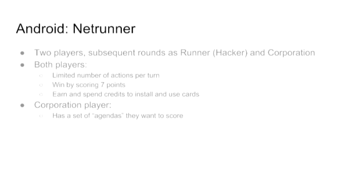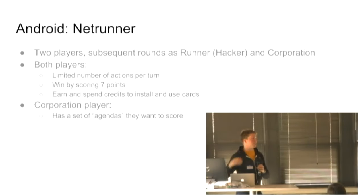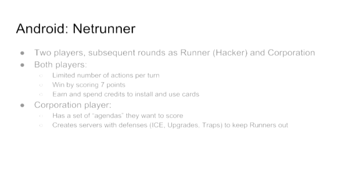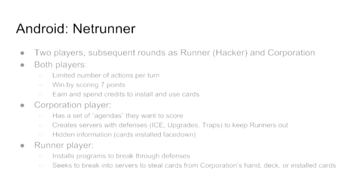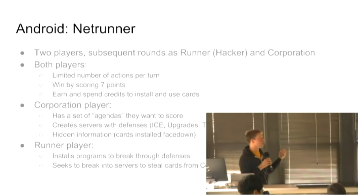The corporation side has these agendas they want to score. So these are kind of like nefarious plans. One of the most popular cards is you write your advertising on the moon and it's really, really cool because everyone looks at the moon and sees your thing and it's worth two points. It's great. They create these servers. They have ice which are kind of these server defenses, upgrades, traps that go into them and these are all designed to keep these hackers out. The really cool part is corporations have this hidden information. They put things face down. You don't know what's behind it. It could be a trap. It could be something really, really useful. The runner player is building money, installing these programs to get through those defenses and is trying to go and steal the cards out of the corporation's hand or the deck or the board before they can actually get to them. So it's kind of really cool. It's this asymmetrical sort of combat between two players.